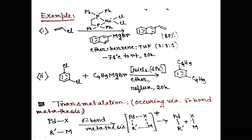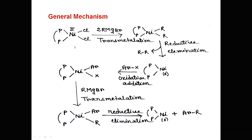Now we see the mechanism of Kumada coupling reactions. For Kumada coupling, nickel(0) species is required, but nickel(0) is not commercially available. So we start with nickel(II) species, and nickel(II) converts to nickel(0) in situ, that means in the reaction medium. We take nickel(II) species and it undergoes transmetallation reactions with the Grignard reagent.